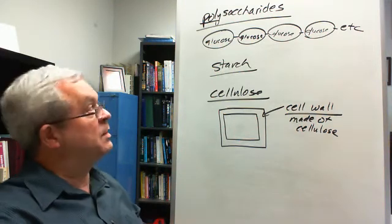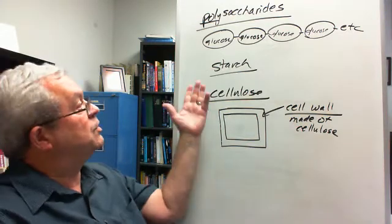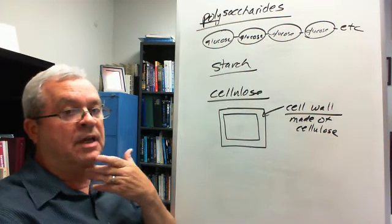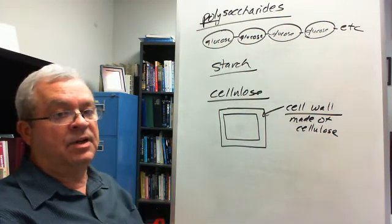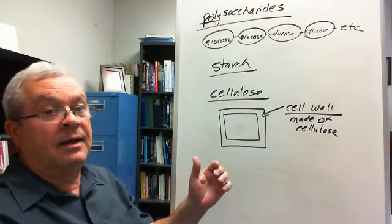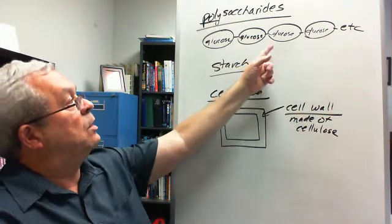Let's look at starch first. Starch is a bunch of glucoses hooked together. If you ate some starch today, what's happening to that starch as it moves through the pipeline? It's being digested. What does that mean? It's being taken apart into its glucose subunits.